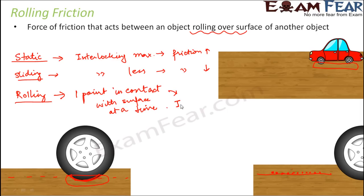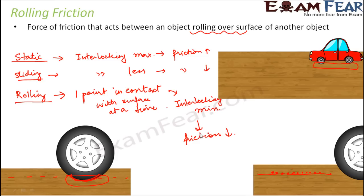Because of this, interlocking is minimum - almost zero - and therefore friction is also minimum. So rolling is another way of reducing friction, and that is why it is said that wheels were one of the best inventions to help mankind.